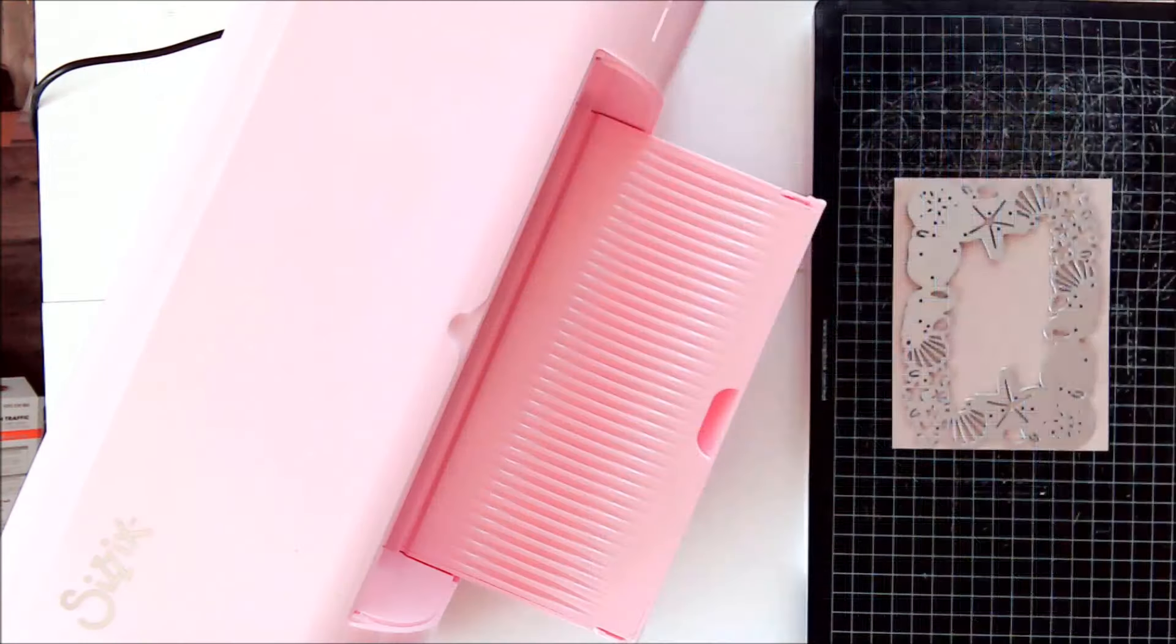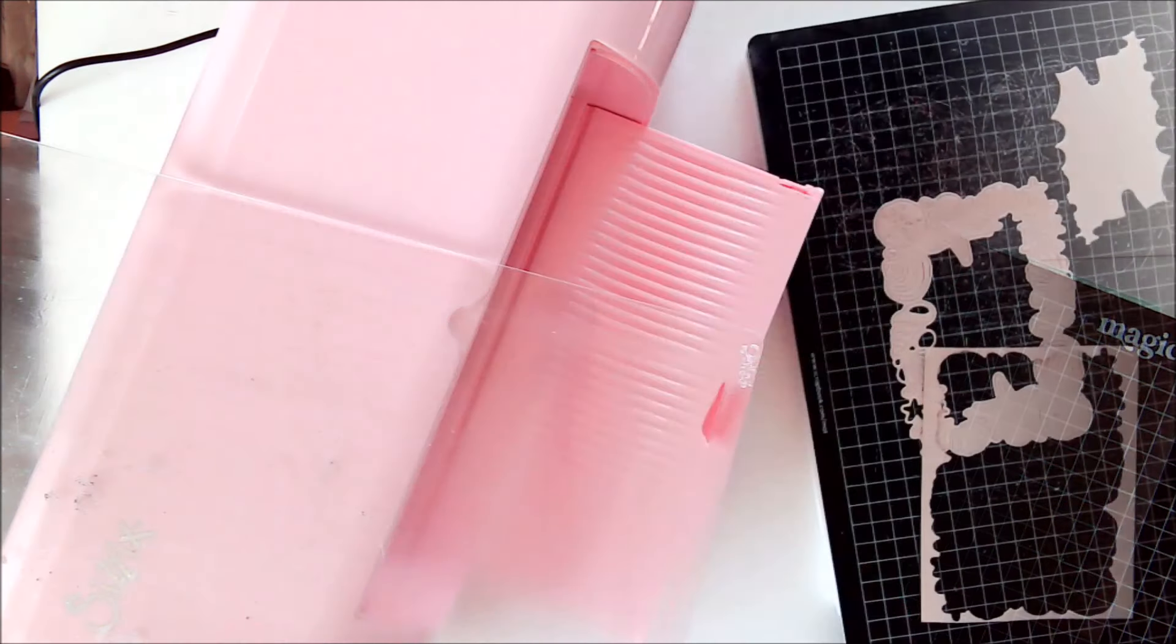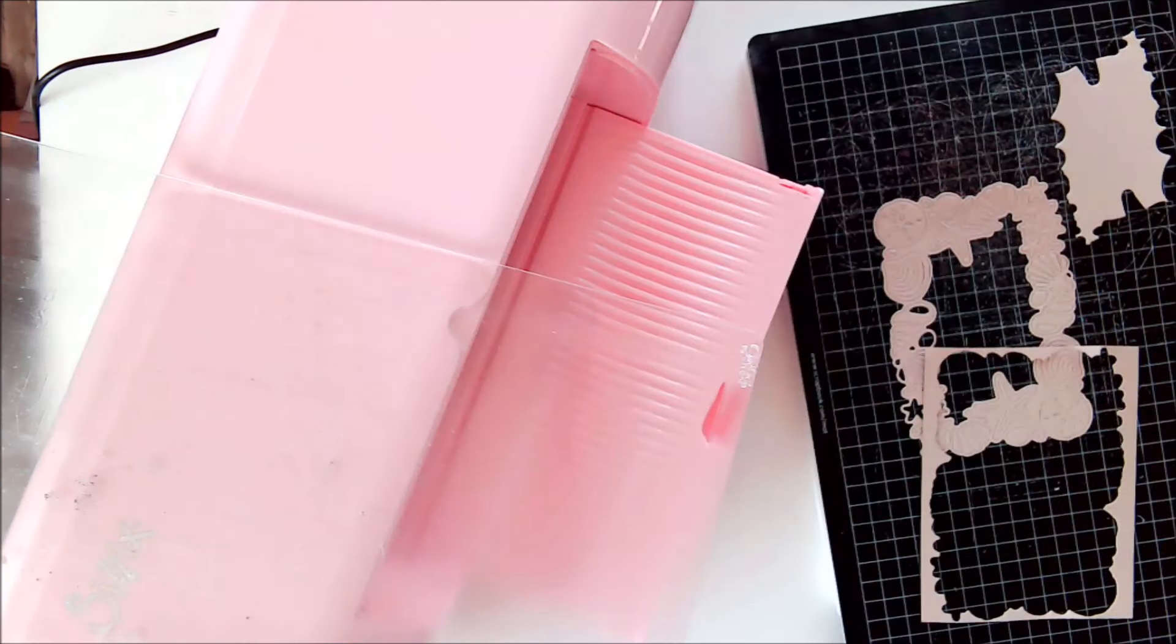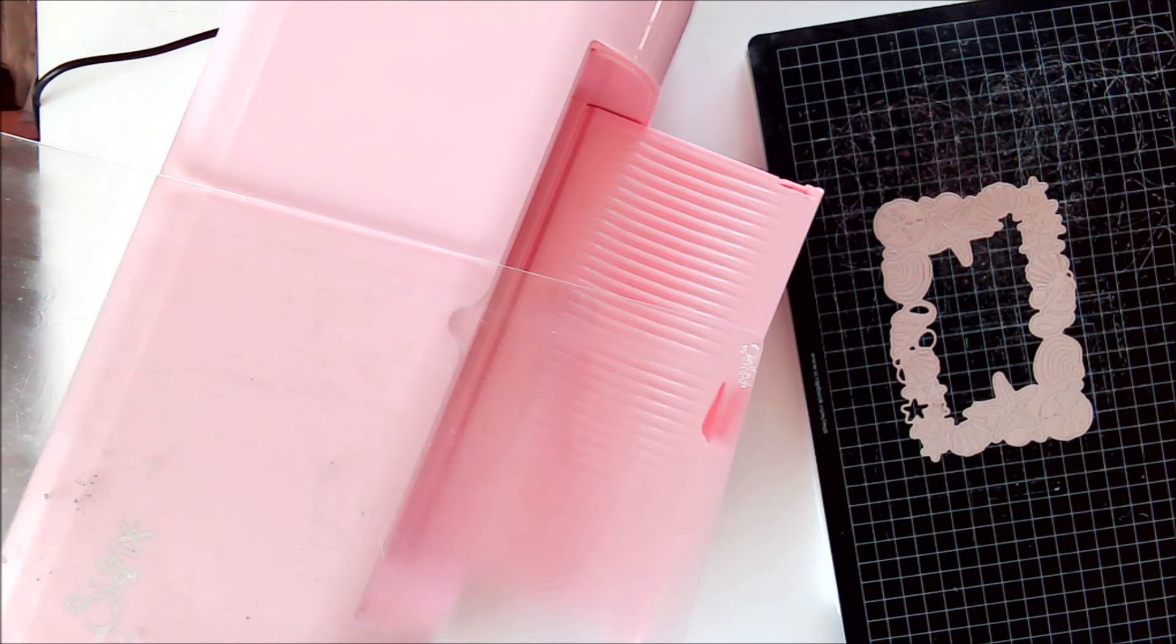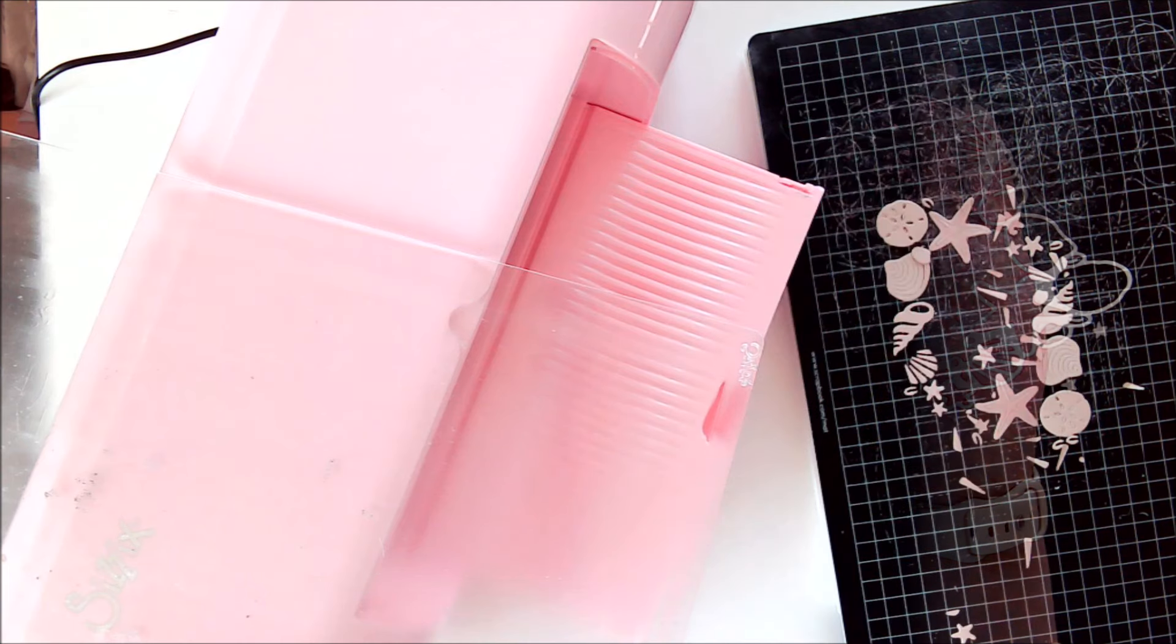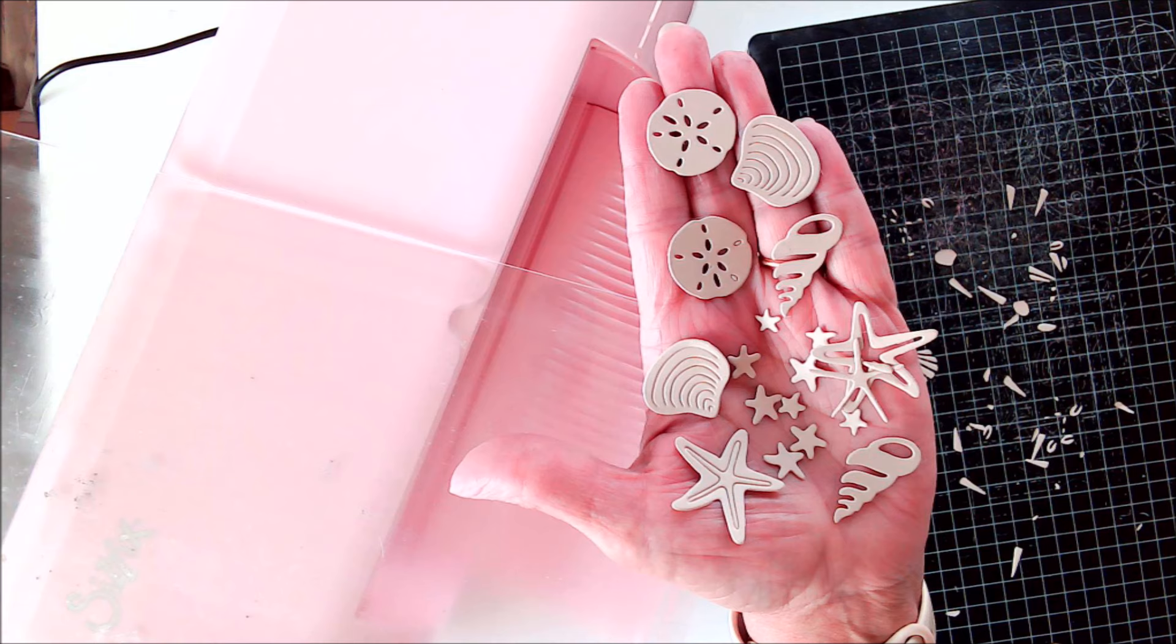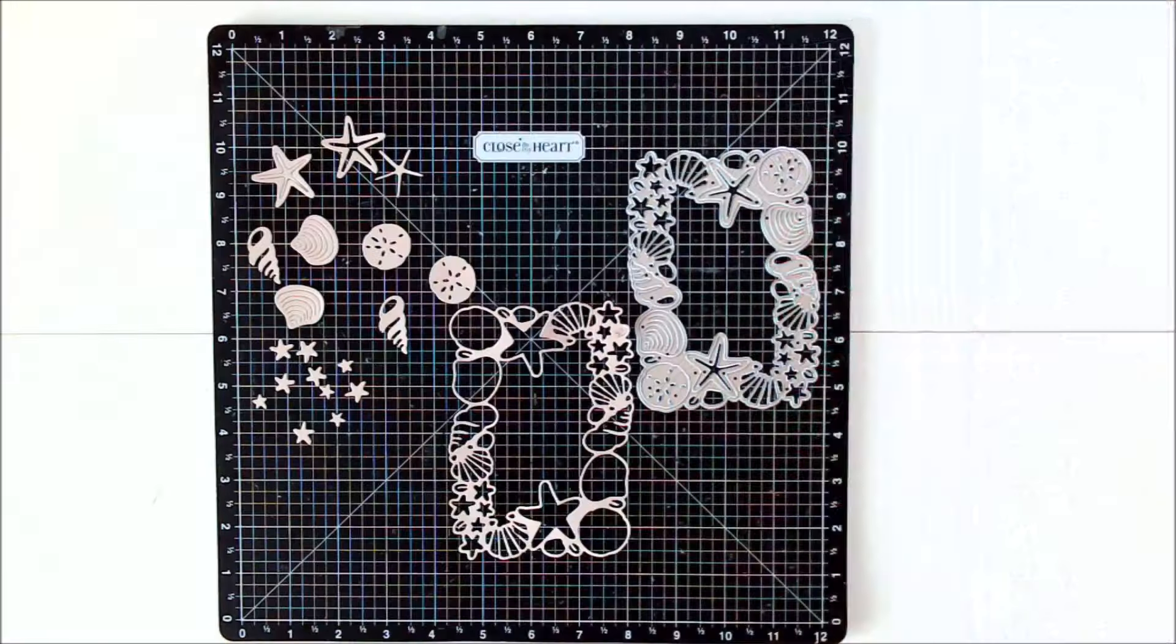And I am using my Sizzix Big Shot Switch Plus to do the die cutting, and I'm really happy with how well this cut, including all of the intricate little pieces, everything just popped right out with no problem. And I love all of the seashells and starfish that are cut out because they can be used separately or inlaid back in like I'm going to do.